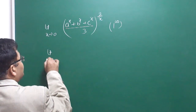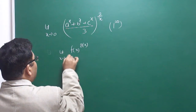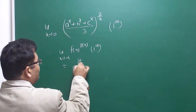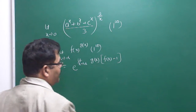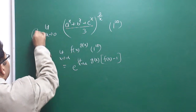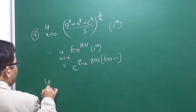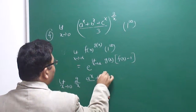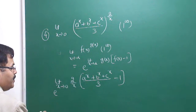Let me remind you the approach for 1^∞ form. For limit x→α of f(x)^g(x), when it is in the 1^∞ form, the result equals e to the power of limit x→α of g(x)·(f(x) − 1). Using this fact, we can write the answer as e to the power of limit x tends to 0 of (2/x)·((a^x + b^x + c^x)/3 − 1).